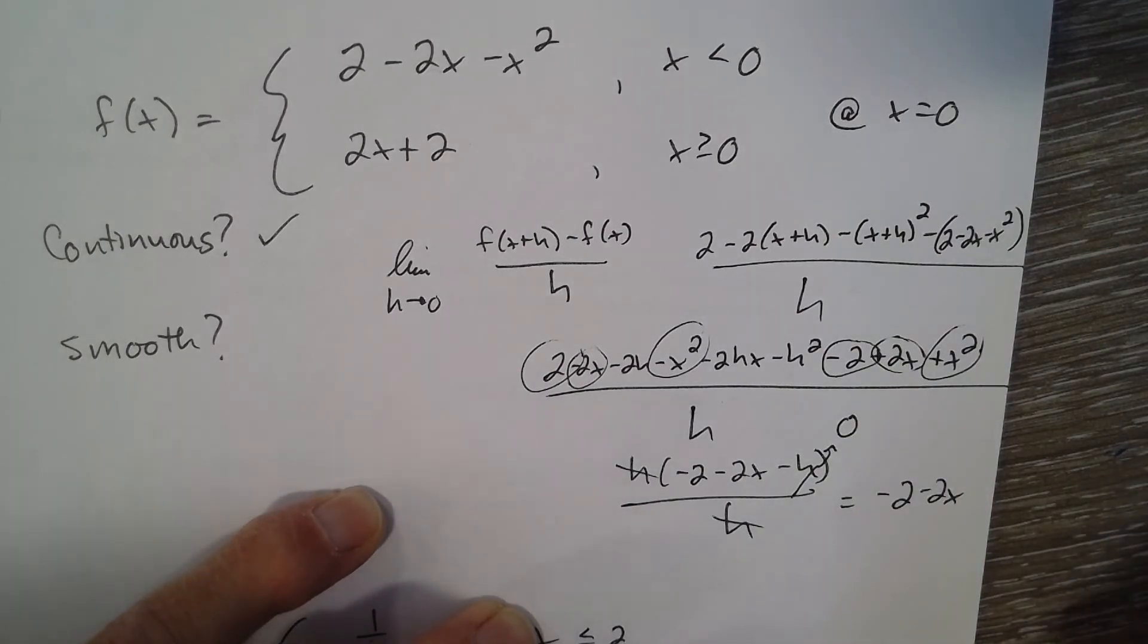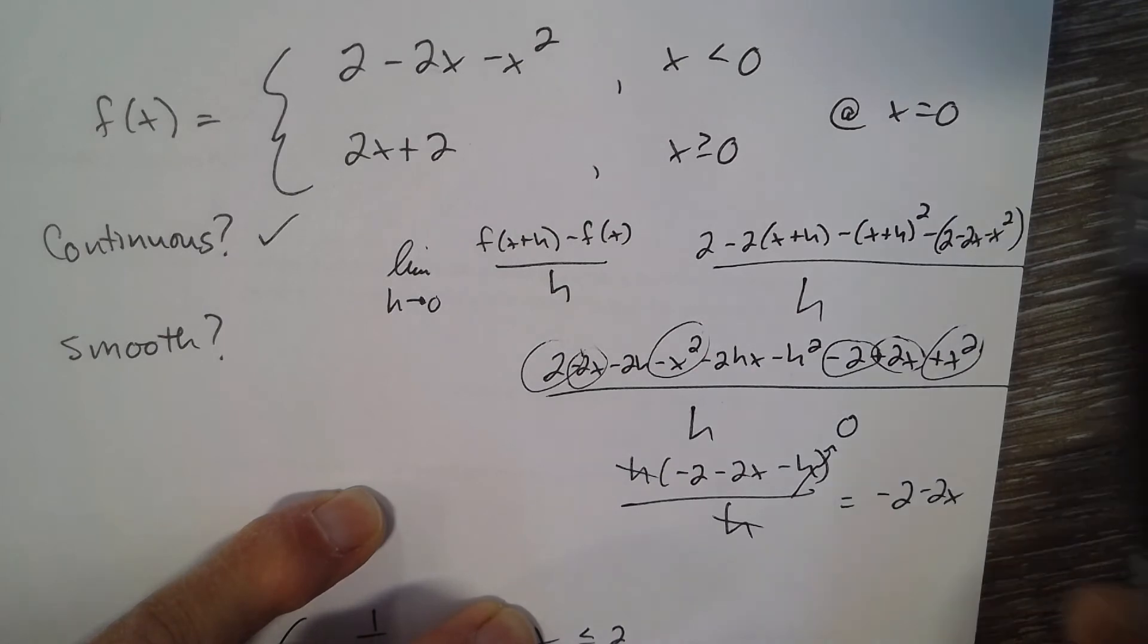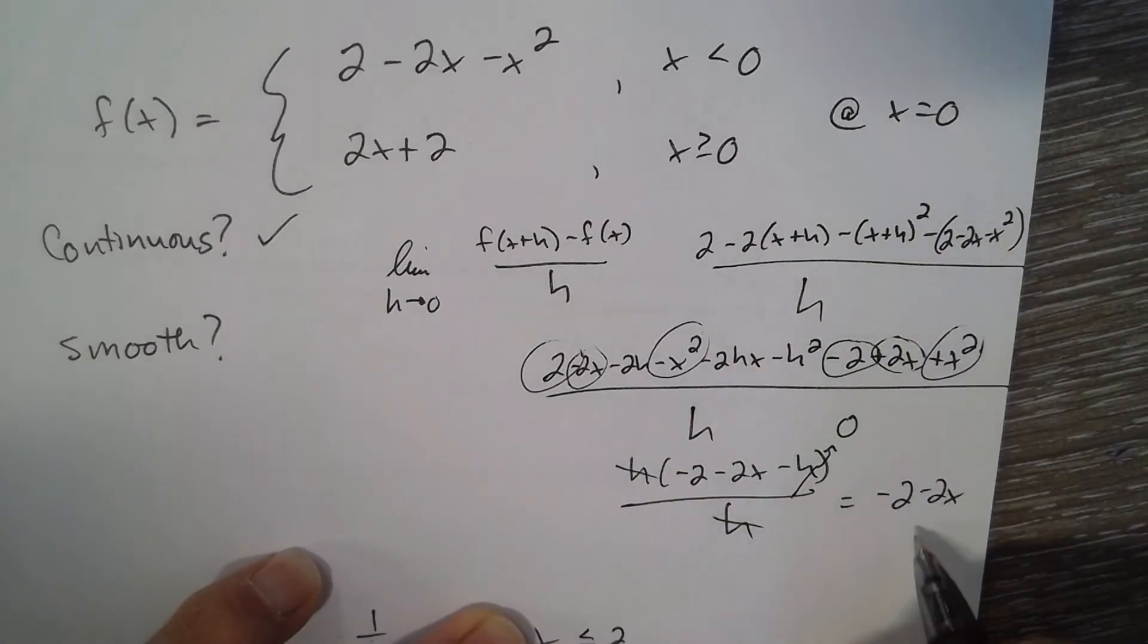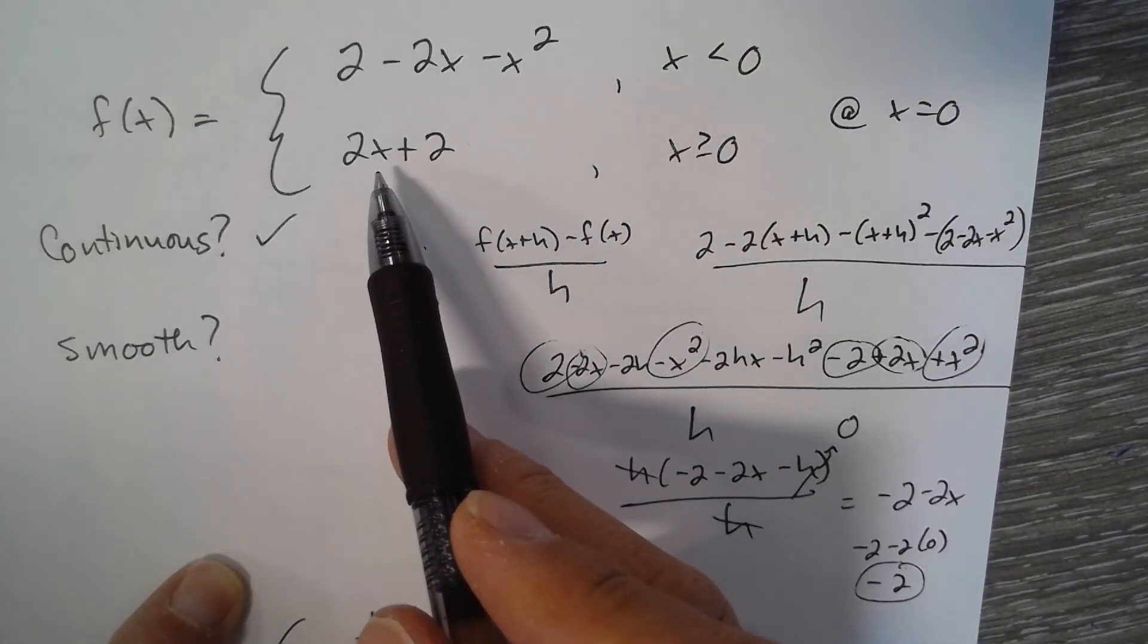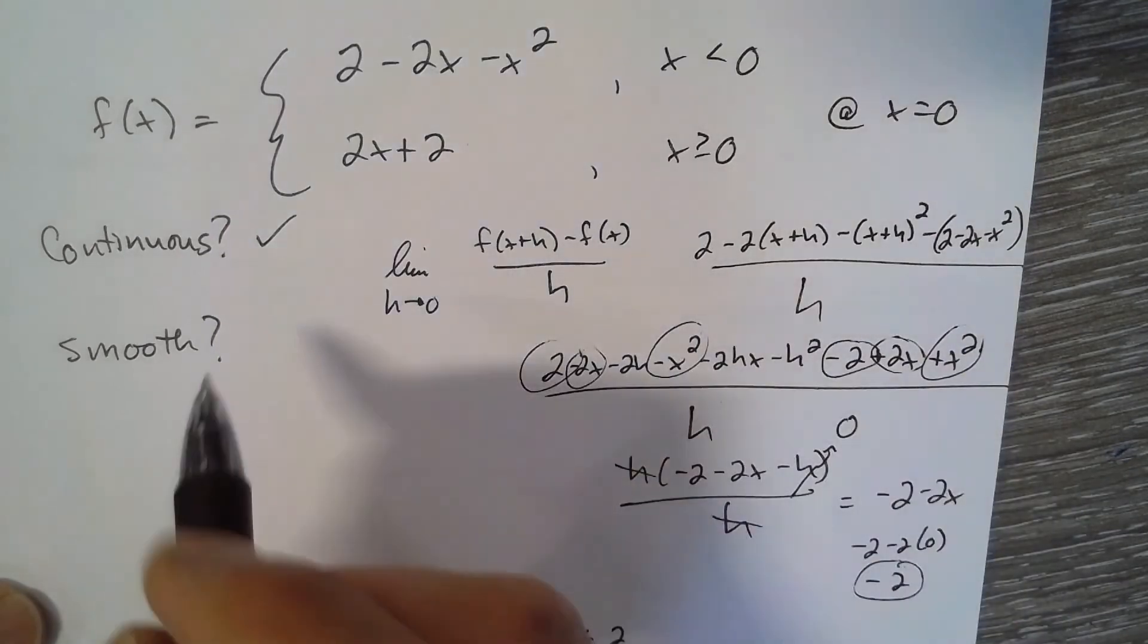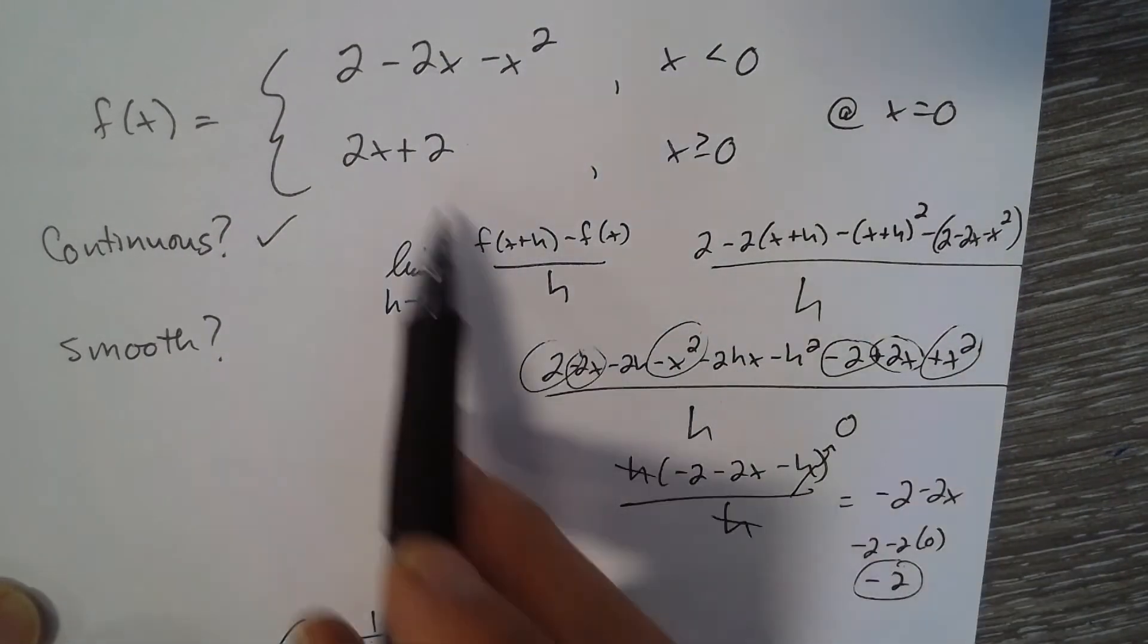Now we want to know at zero. I plug in zero: negative 2 minus 2 times zero, so I get negative 2. So the slope is negative 2. The slope of this line is 2, so it is not smooth because they have different slopes.